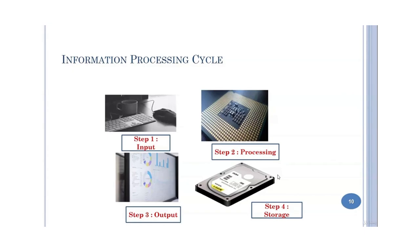Step number three of the information processing cycle is the output. In this step the computer displays the results of its processing. The results may appear as numbers, text, or graphics on the screen, or as sound from speakers. The computer may also send output to a printer or to another computer through a network such as the internet.